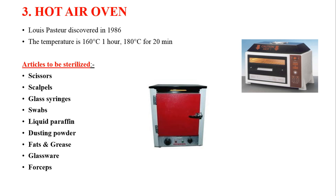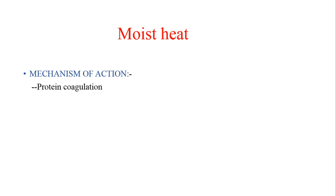The third and very popular dry heat method is the hot air oven, discovered by Louis Pasteur. The temperature ranges used are 160°C for one hour, or 180°C for 20 minutes. A variety of materials can be sterilized using a hot air oven, including scalpels, glassware, liquid paraffin, and many more.